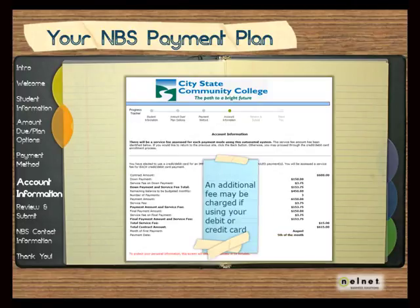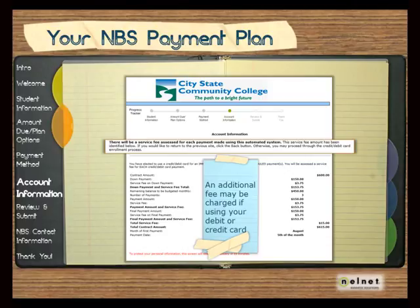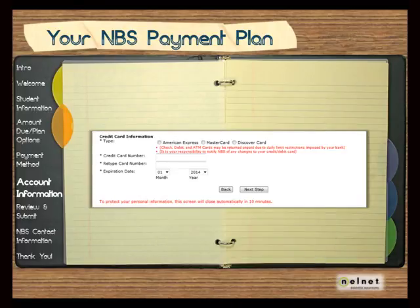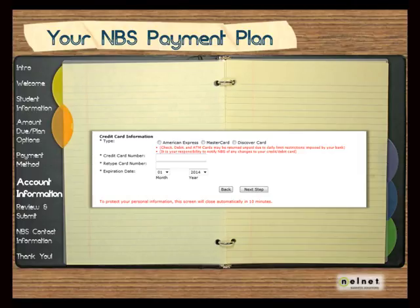If you have selected to pay by credit or debit card, an additional fee may be charged to use this option. If a fee is applicable, you will be directed to a disclosure page which breaks down any additional fees. If you would prefer to use a bank account instead, just use the progress tracker. If you wish to proceed using your credit or debit card, click on the Next Step button. Next, enter the information of the person responsible for payment as previously discussed. Select the card type, enter the card number twice, and select the expiration date. Do not copy and paste the credit card number — enter it manually both times to ensure accuracy. Once the credit card information has been entered and you have verified it for accuracy, select the Next Step button.